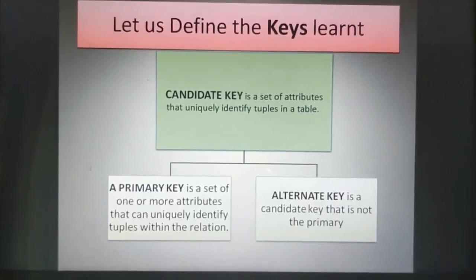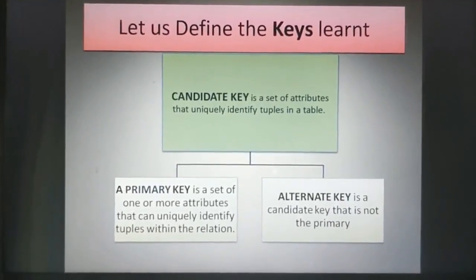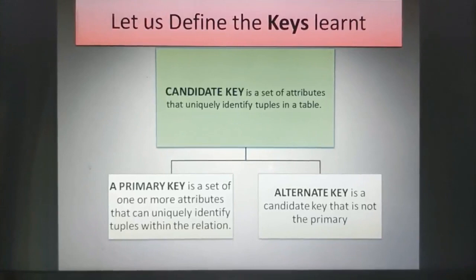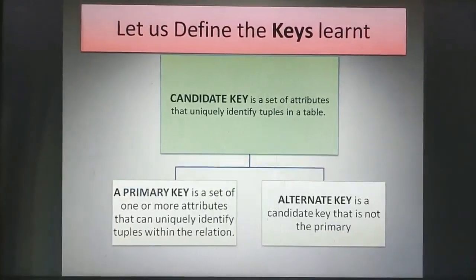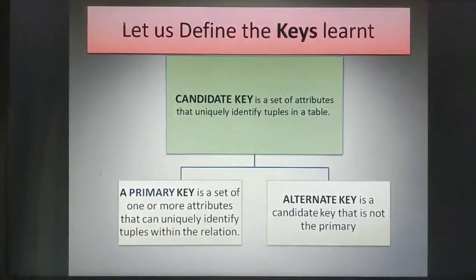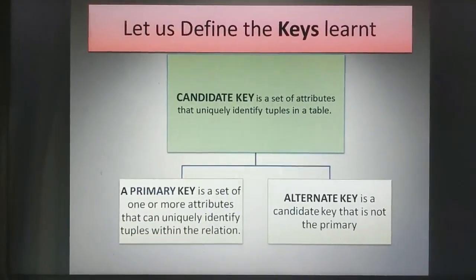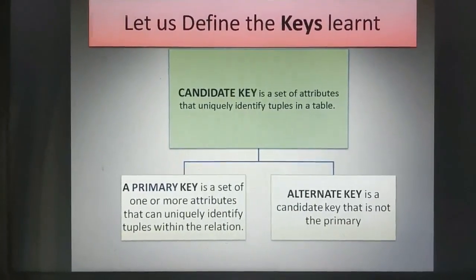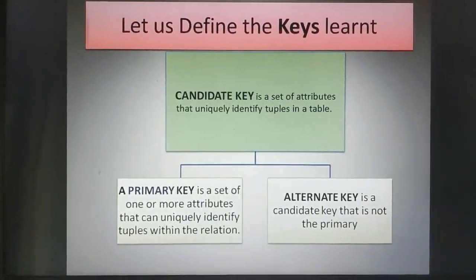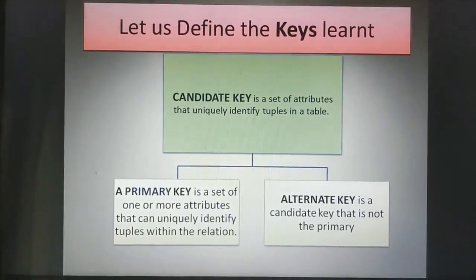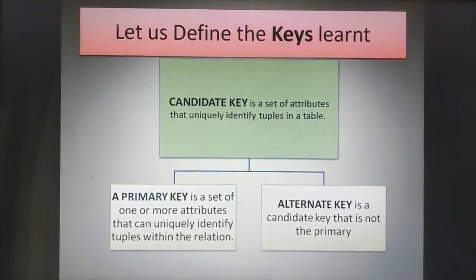Let us define the keys we have learnt. Candidate key is a set of attributes that uniquely identify tuples in a table — tuples meaning records. Under candidate key, primary key and alternate key are included. Primary key is a set of one or more attributes that can uniquely identify tuples within the relation. Alternate key is a candidate key that is not the primary key.